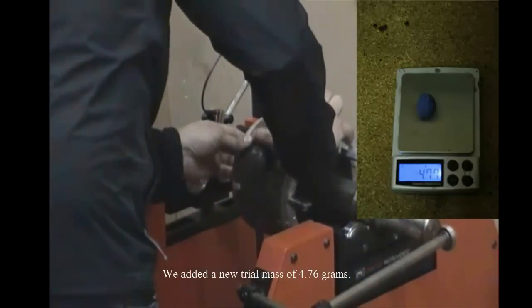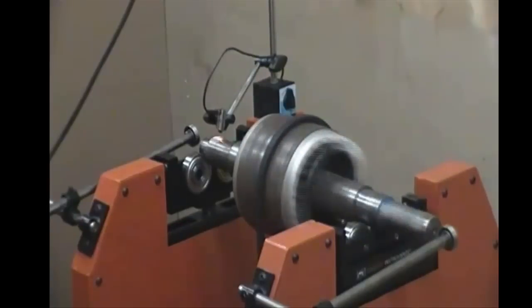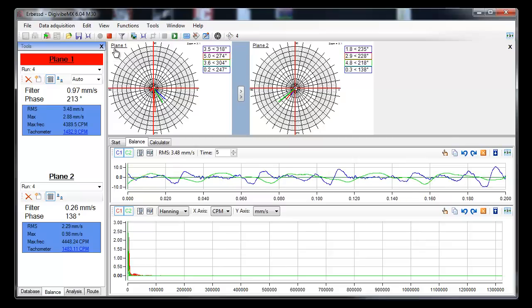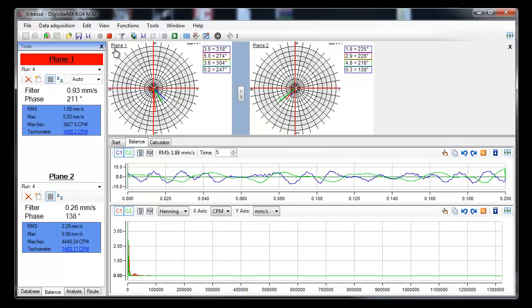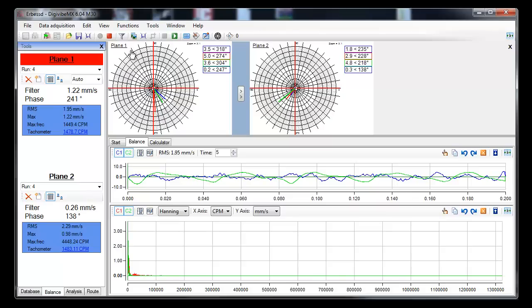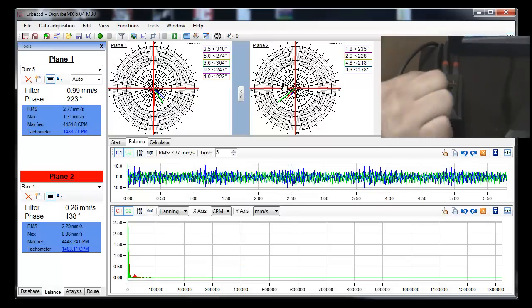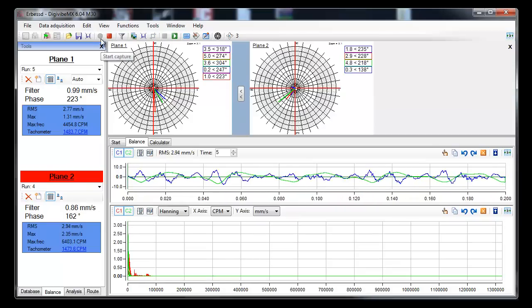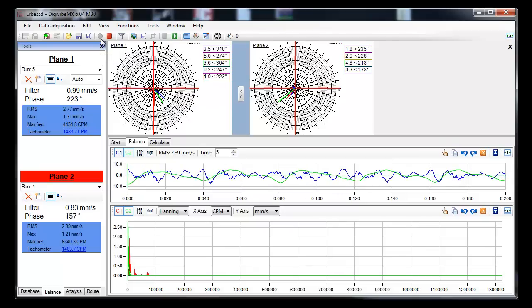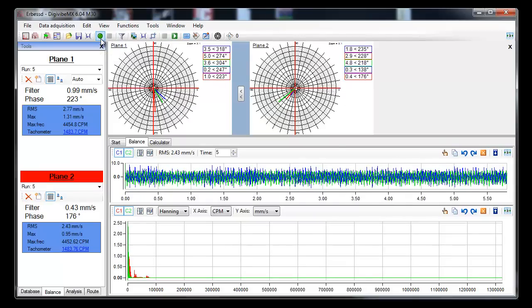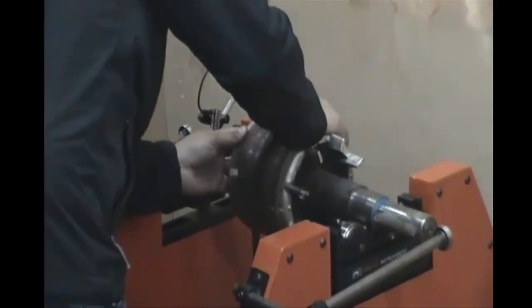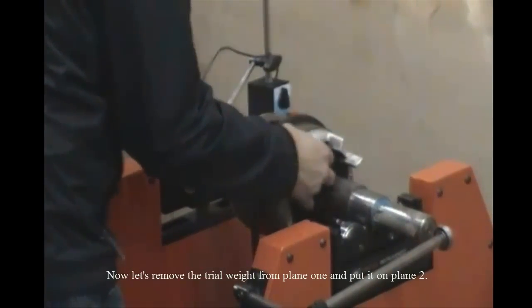We added a trial mass of 4.76 grams. Now let us remove the trial weight from plane 1 and put it on plane 2.